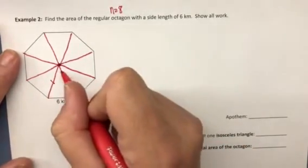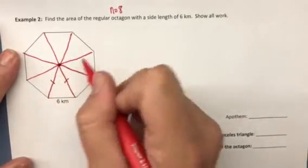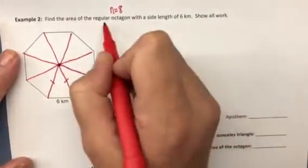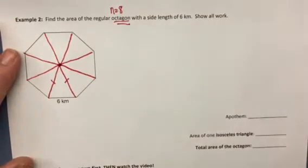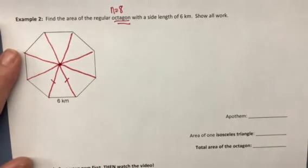So we have one, two, three, four, five, six, seven, eight. We're always going to have the same number of triangles that we have of sides. So this is different than when we found triangles by connecting vertices - we're connecting these to the center.